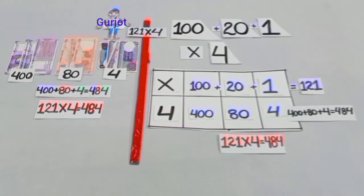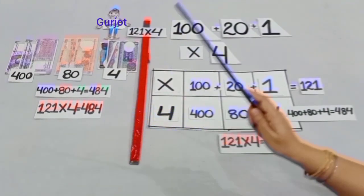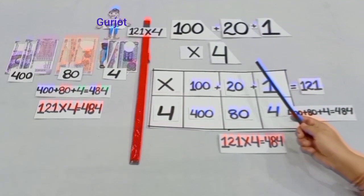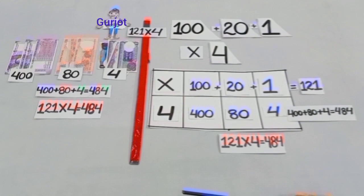So students, you can see in both the cases, the answer for our question, 121 multiplied by 4 is 484.